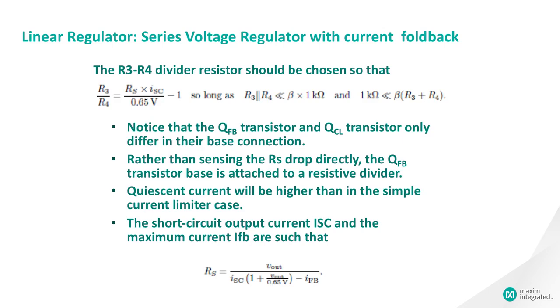Notice that the QFB transistor and QCL transistor only differ in their base connection. Rather than sensing the RS drop directly, the QFB transistor base is attached to a resistive divider, and so it becomes active at a different stage than the QCL transistor current limit. Because the R3-R4 divider draws additional current, quiescent current will be higher than in the simple current limiter case.